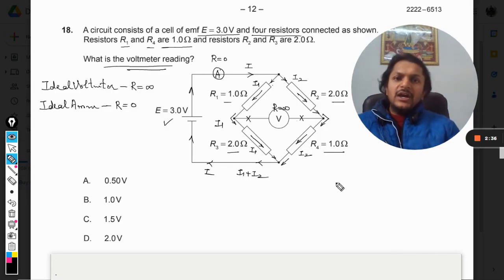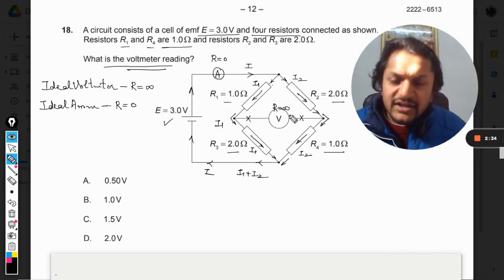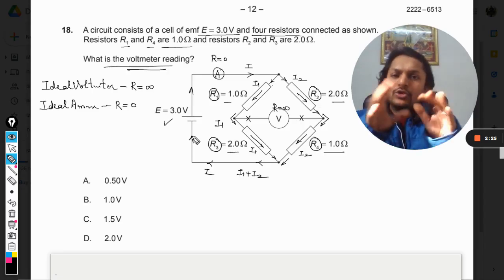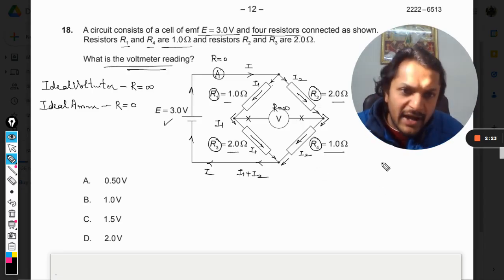Obviously if this branch is not working, you can just remove it and you can say that R2 is in series with R4, and R1 is in series with R3, and both of these are later in parallel.